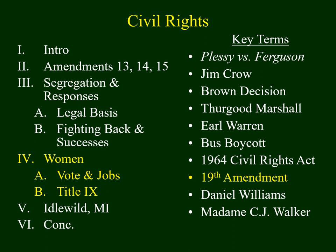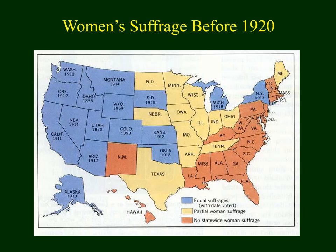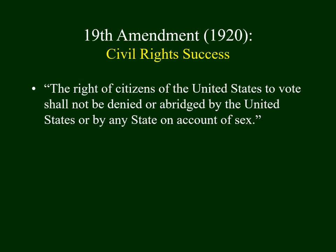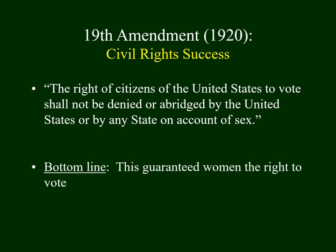Now I'd like to switch gears and talk about women. This map identifies the status of women's suffrage prior to 1920. The blue states indicate states where women had full voting rights before 1920. If you notice, there were only two states east of the Mississippi that allowed women full voting rights: New York and Michigan. Women's rights were transformed in 1920 when the 19th Amendment passed, guaranteeing all women the right to vote.